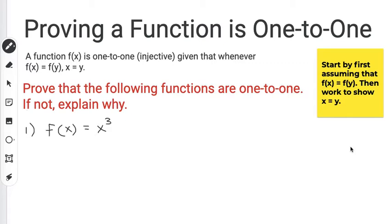What we want to do is take each function that they give us and prove that it's one to one. And if it's not one to one, then explain why. So we're going to start off by assuming that f(x) equals f(y), and then we're going to work to show that x equals y in the end.